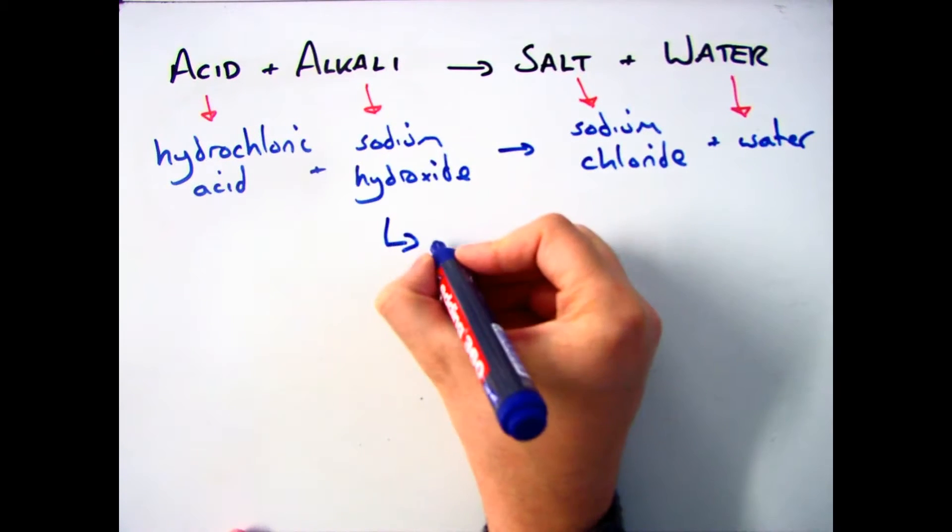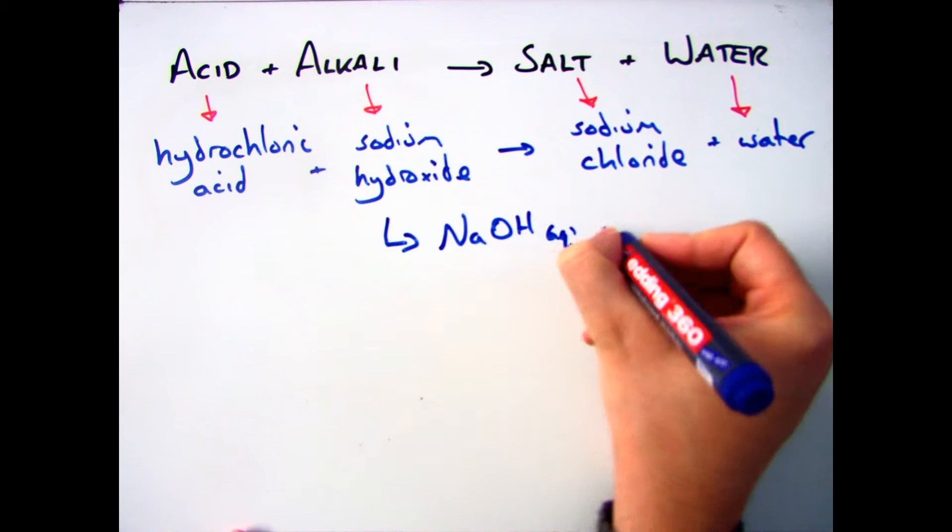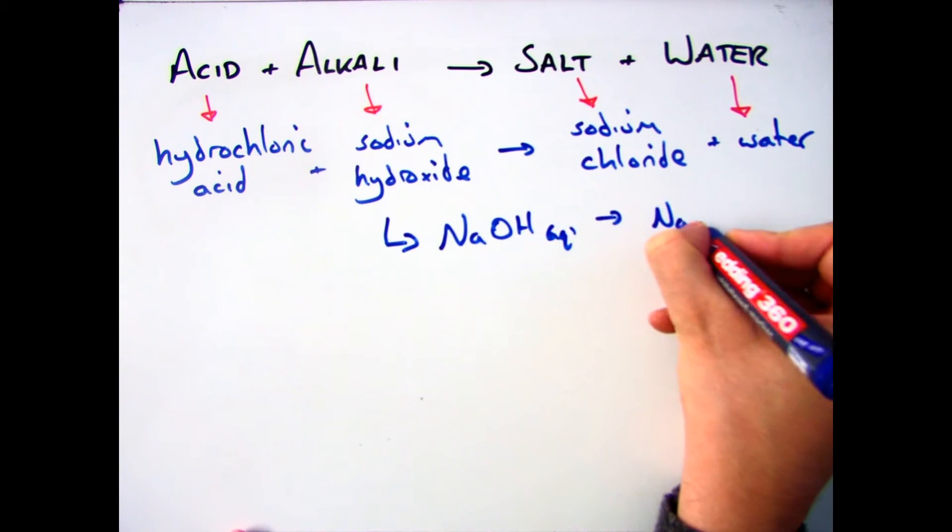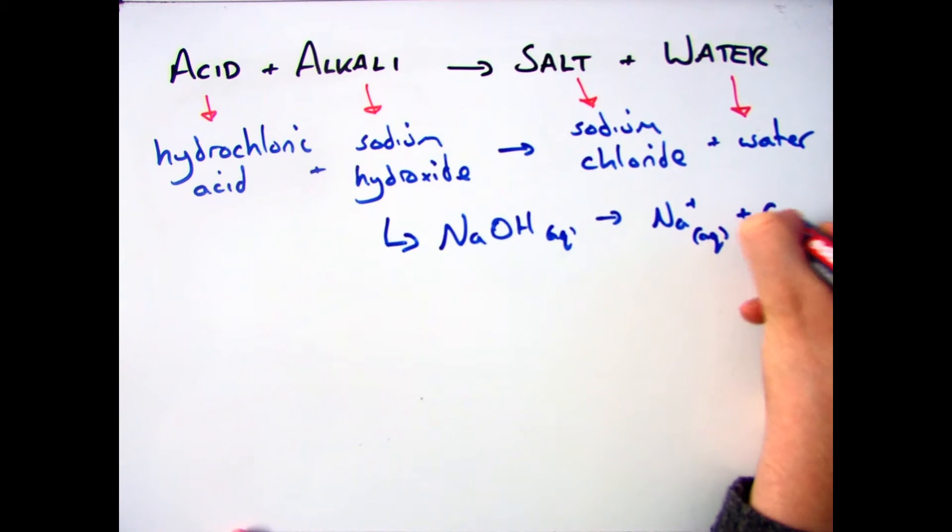If we then have a look at the alkali, sodium hydroxide, which has the formula NaOH, it's aqueous, which means it's soluble. And as soon as it's in solution, it dissociates into your Na plus ions and then your hydroxide, which you need to remember is OH minus.